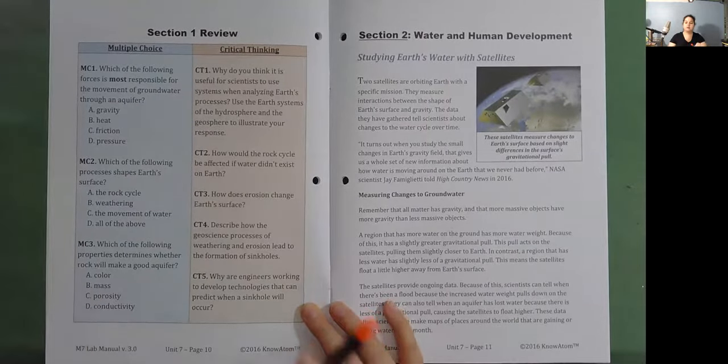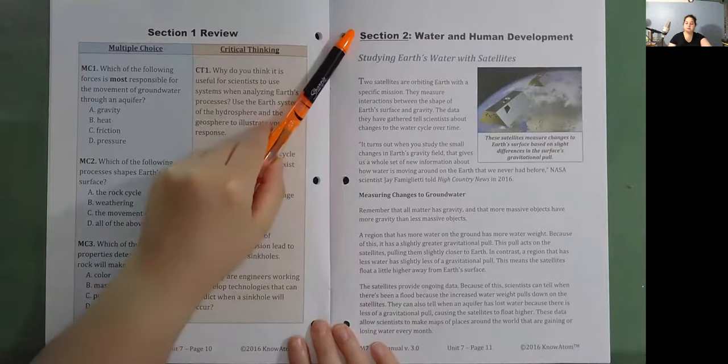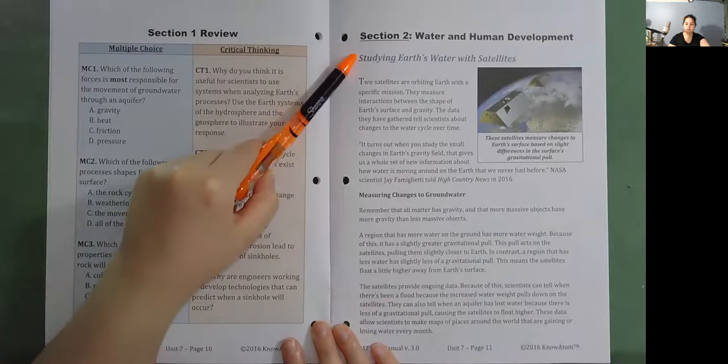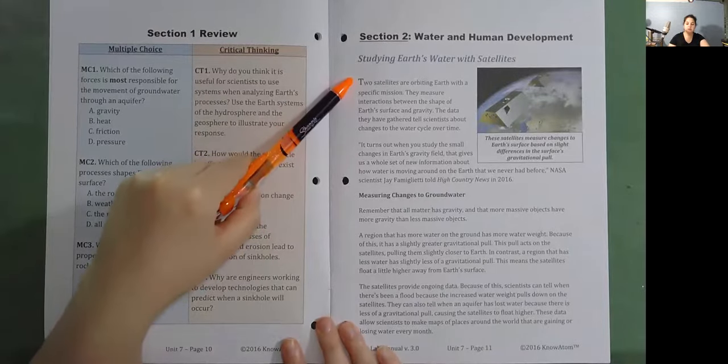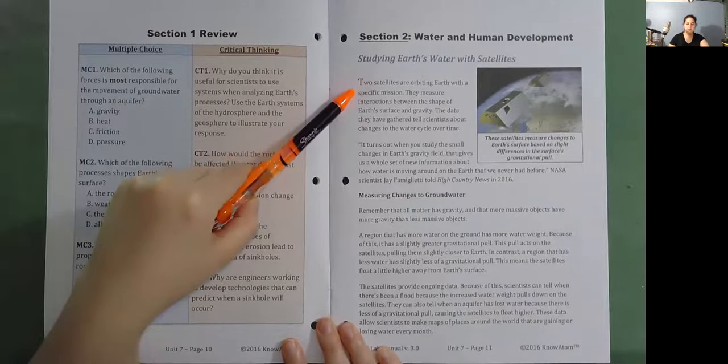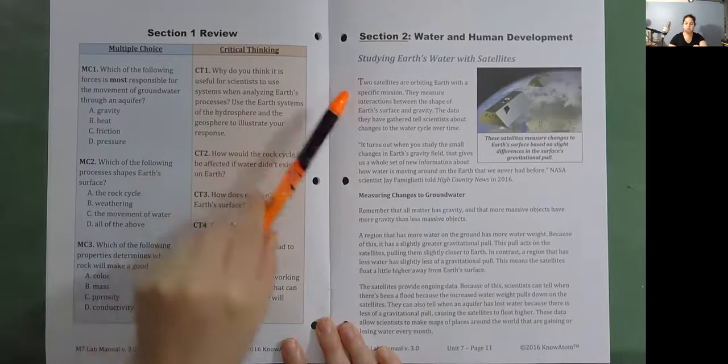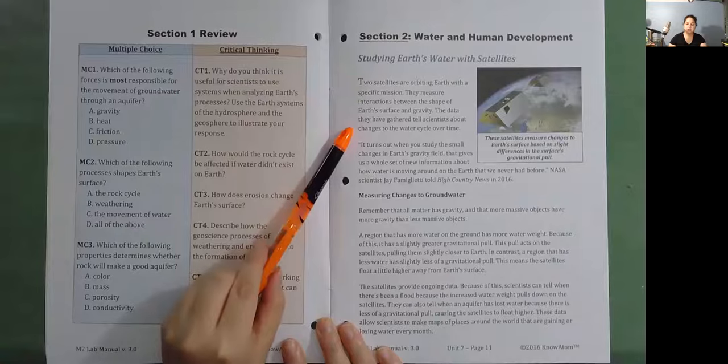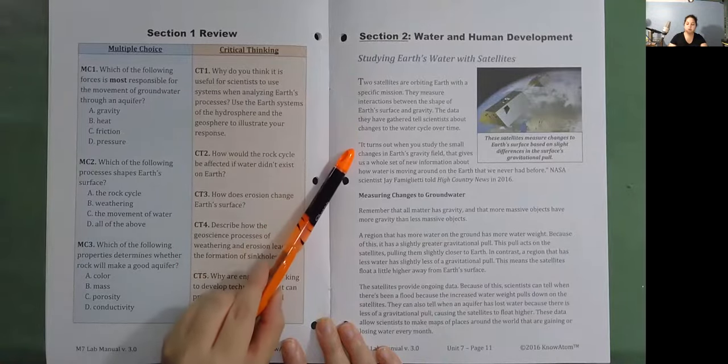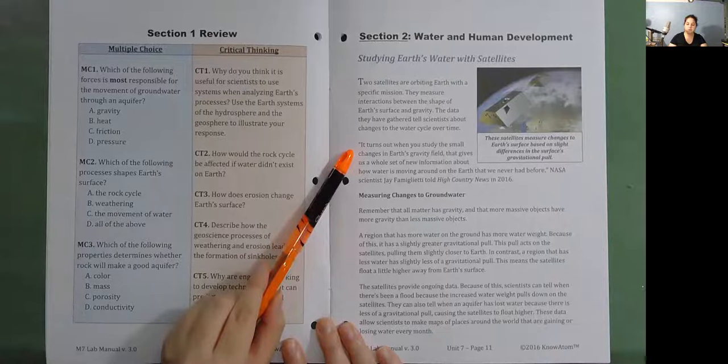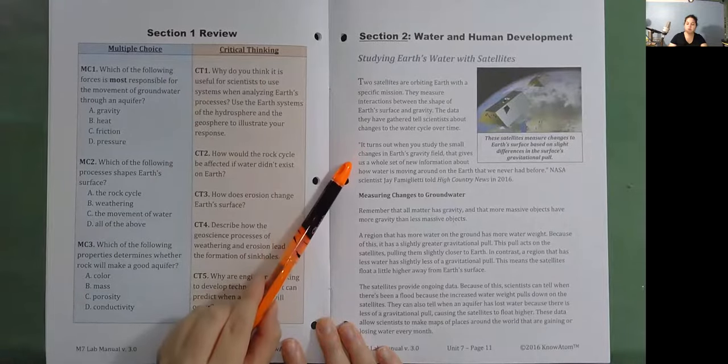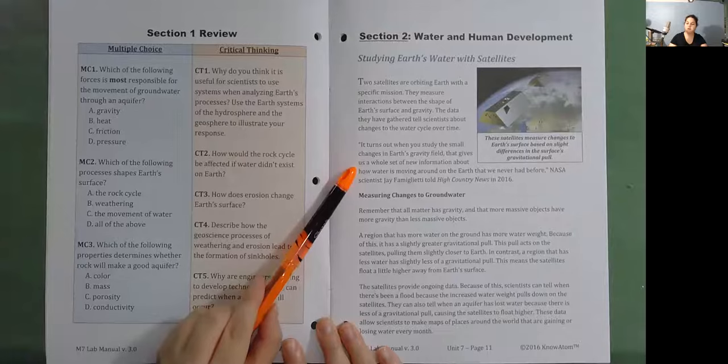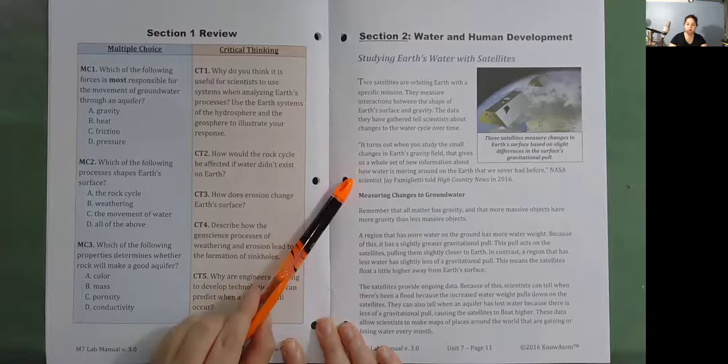Section 2: Water and Human Development. Studying Earth's Water with Satellites. Two satellites are orbiting Earth with a specific mission. They measure interactions between the shape of Earth's surface and gravity. The data they have gathered tells scientists about changes to the water cycle over time. It turns out, when you study the small changes in Earth's gravity field, that gives us a whole set of new information about how water is moving around on the Earth that we never had before, NASA scientist Jay Famigliotti told High Country News in 2016.